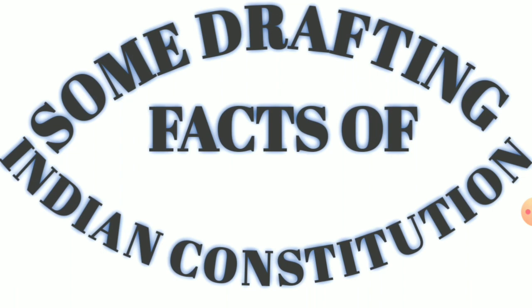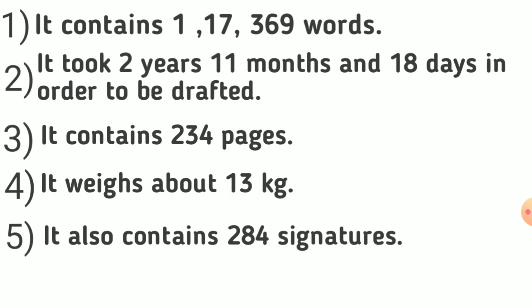Now we will discuss some drafting facts of the Indian Constitution. First, it contains 1,17,369 words. Second, it took 2 years, 11 months and 18 days to be drafted. Third, it contains 234 pages. Fourth, it weighs about 13 kg. Fifth, it contains 284 signatures.